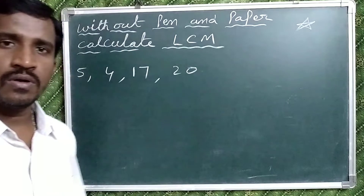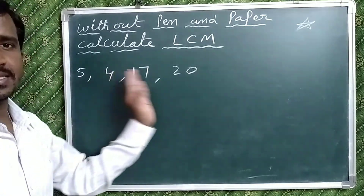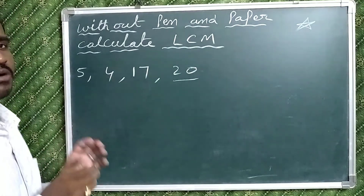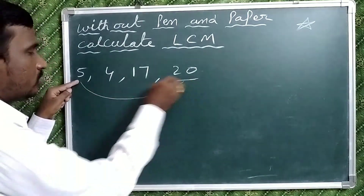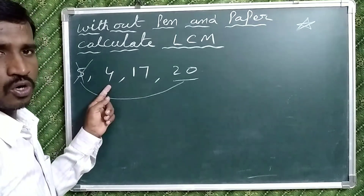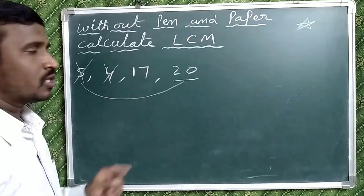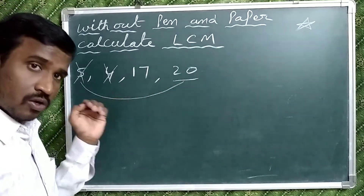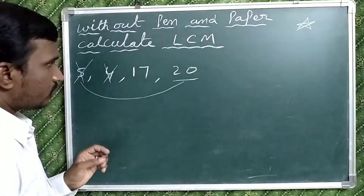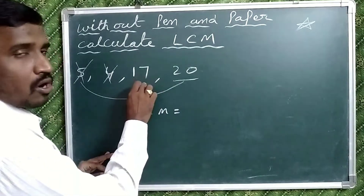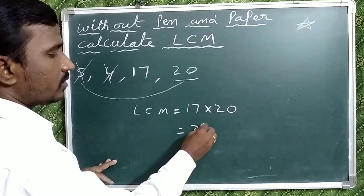Now observe one more example for better understanding. Select the highest number from the group of numbers — here the highest number is 20. Check whether the rest of the numbers are factors of 20 or not. Here 5 is a factor of 20, so leave it. Now take 4 — 4 is also a factor of 20, so take it out. Now check 17 — 17 is not a factor of 20, and also 17 is a prime number. That is why the LCM will be the product of the highest number and the prime number: 17 into 20 equals 340.